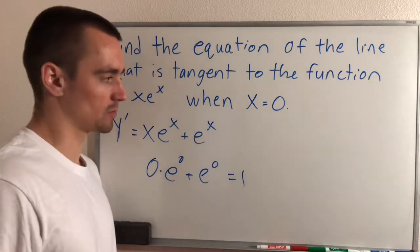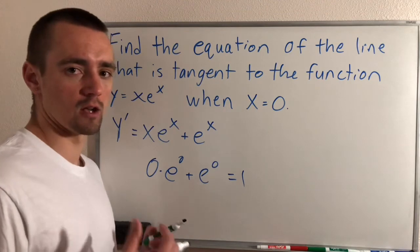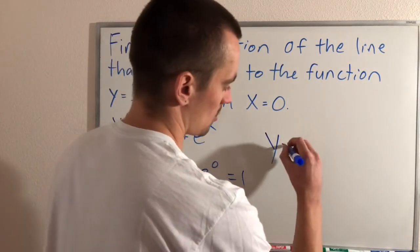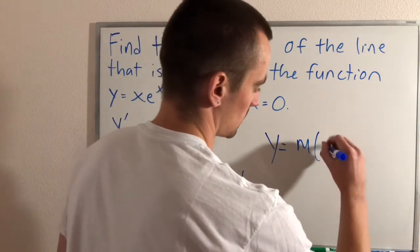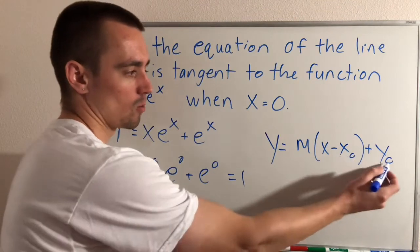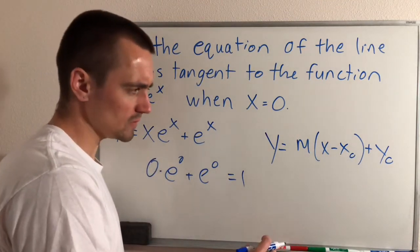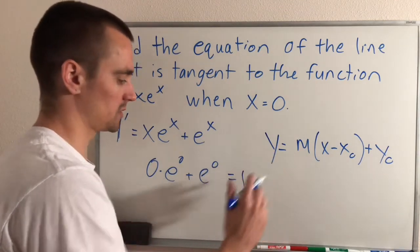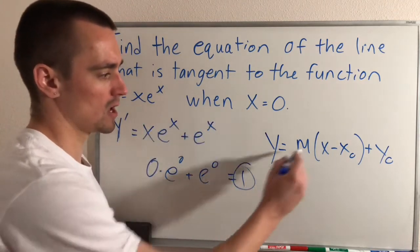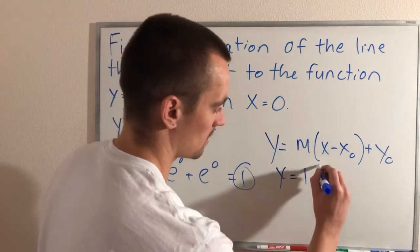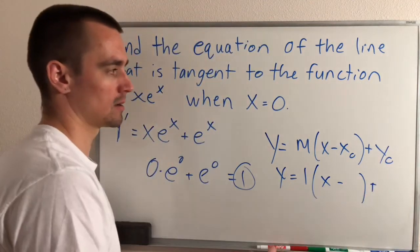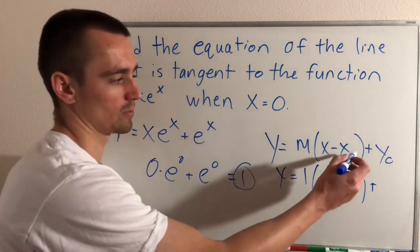A tangent line is just a line — a linear function — and we know it's going to be in the form y equals m times (x minus x₀) plus y₀, where (x₀, y₀) is a point that lies on this linear function. So m is the slope. We know that our function y has a slope of 1 at the point we care about, so we know our m is going to be 1. Now we also need to figure out some x, y coordinate that lies on this line so that we can plug that in.